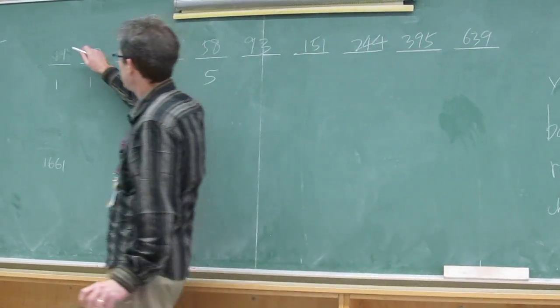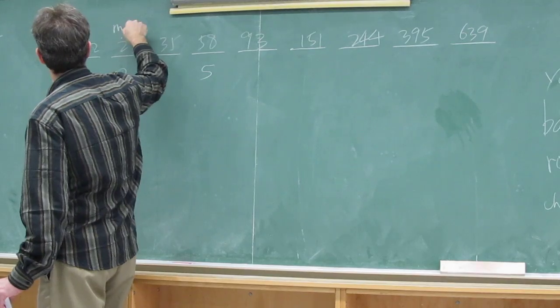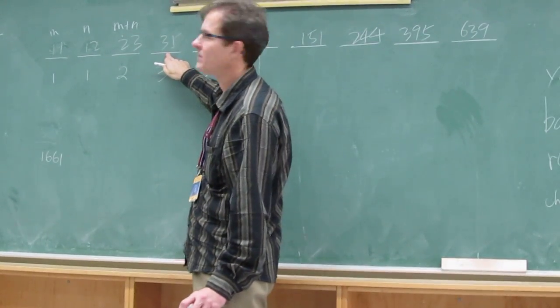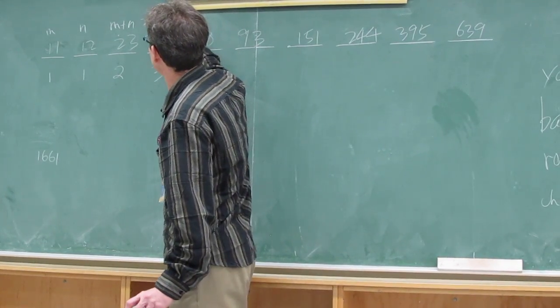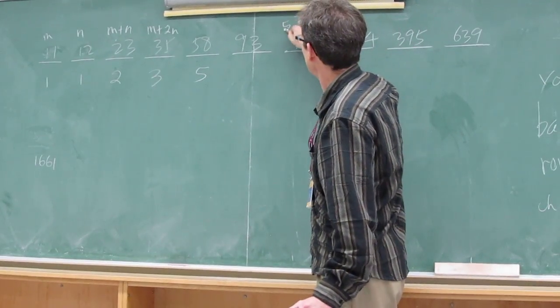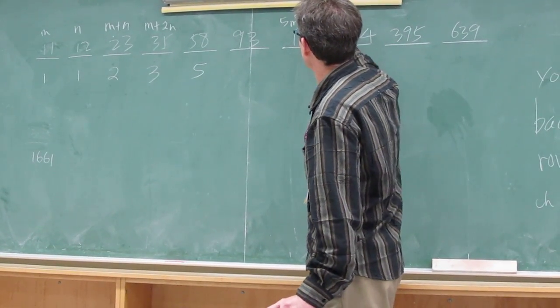Let me explain this to you. If you call this m and call this n, then this is m plus n, correct? What's this one? n plus 2n. Now, if you keep doing that, when you get to the seventh number, it's, if I'm not mistaken, 5m plus 8n.